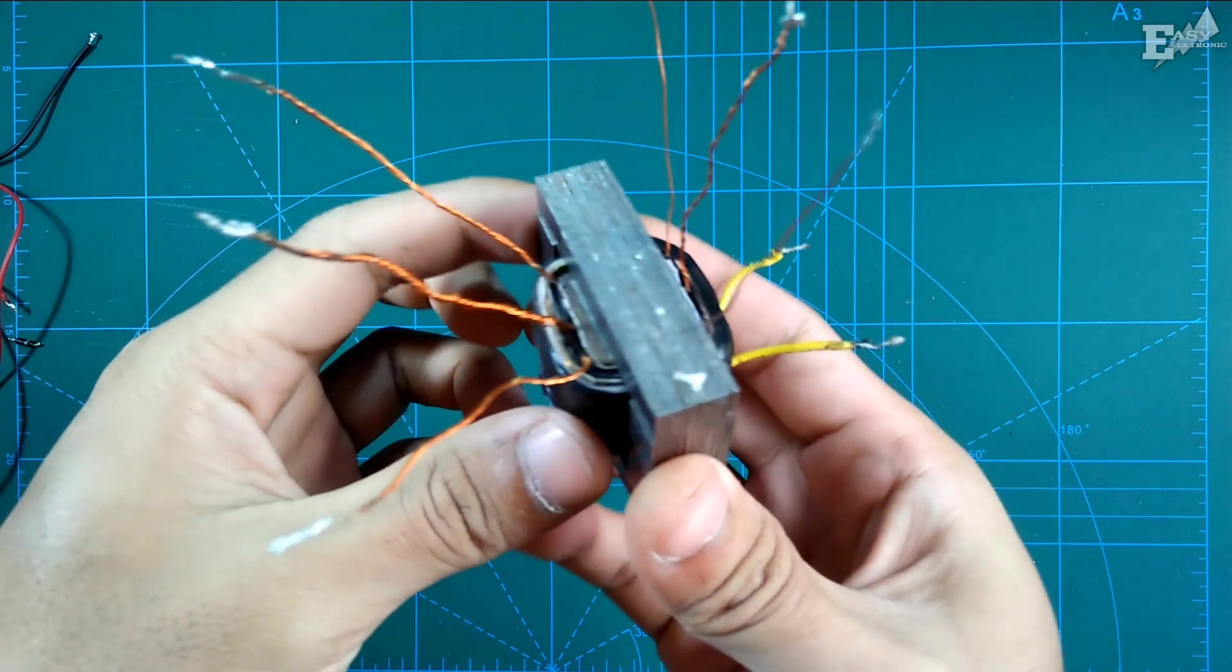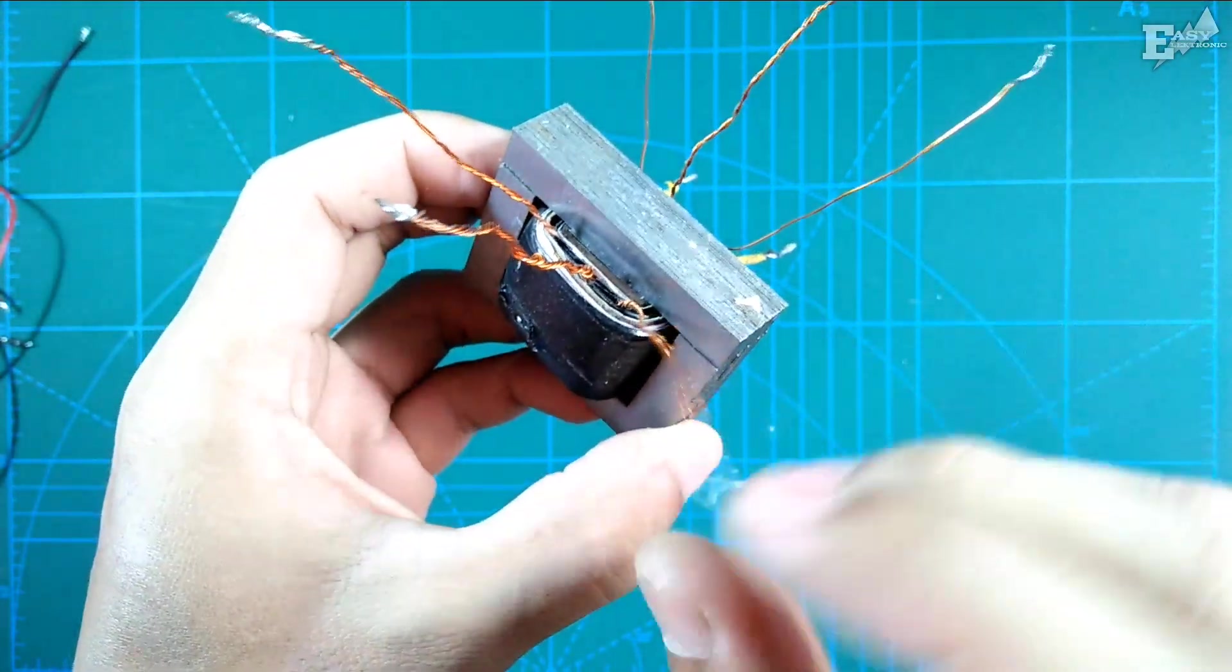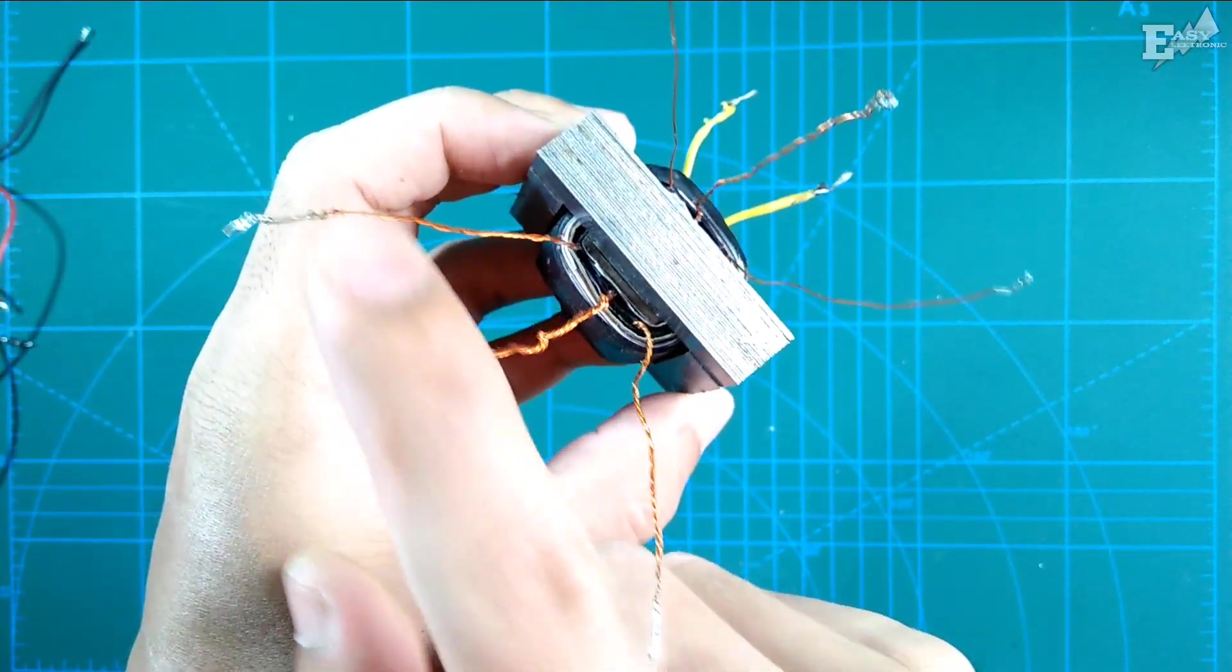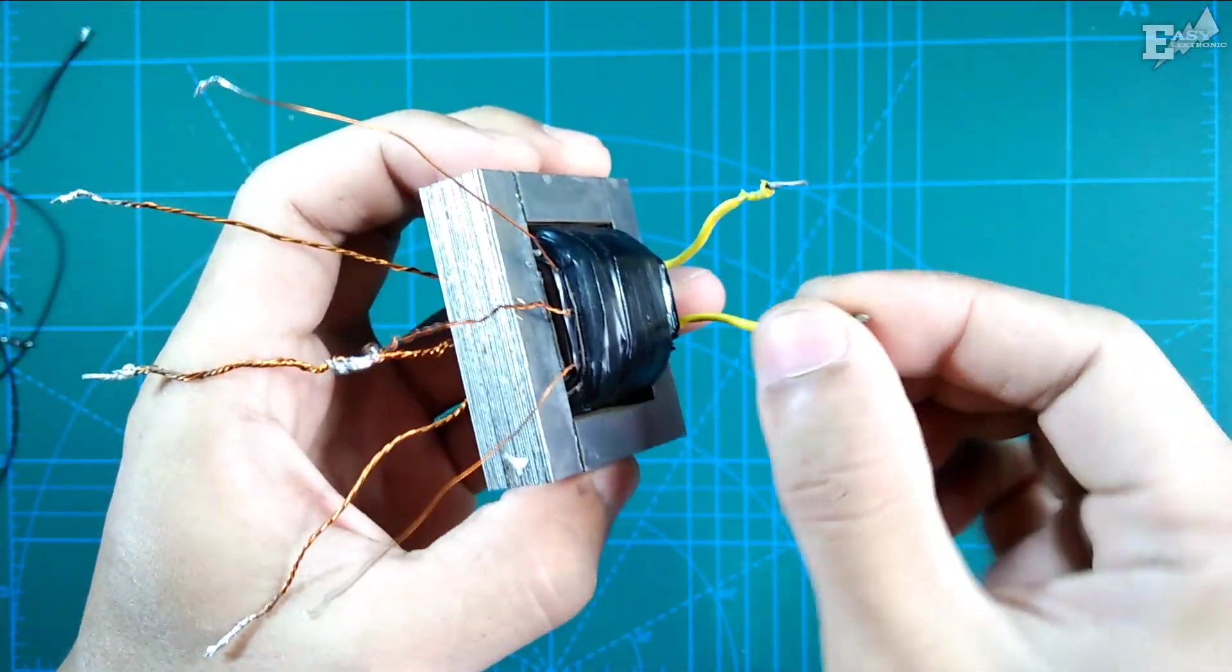Okay, let's get started. This is a 2A transformer that I've rewound. This is for the primer, this is CT and this is the primer, then this is for feedback, and this is the output.